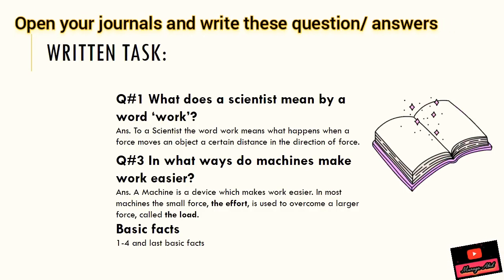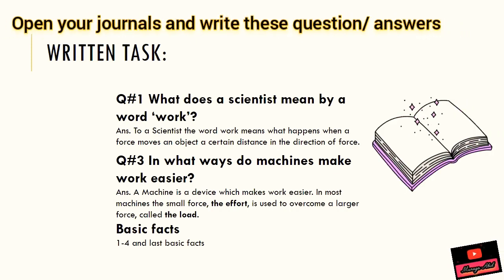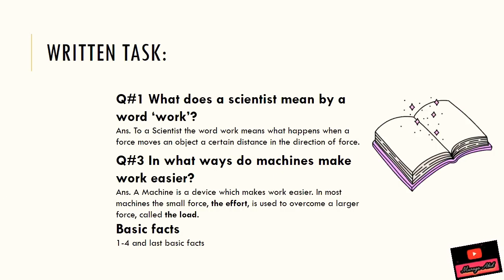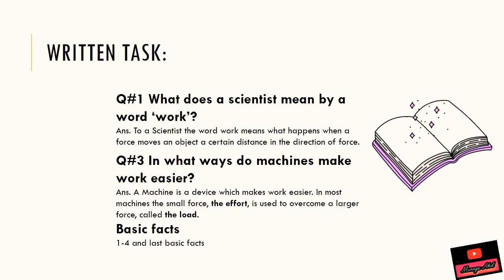Open your copies and journals and prepare the pages with your blue pen. Write neatly. Question number 1: what does a scientist mean by the word 'work'? Answer: to a scientist, the word work means what happens when a force moves an object a certain distance in the direction of the force. Question number 3: in what ways do machines make work easier? Answer: a machine is a device which makes work easier. In most machines, the small force — the effort — is used to overcome a large force called the load.